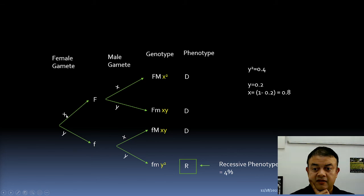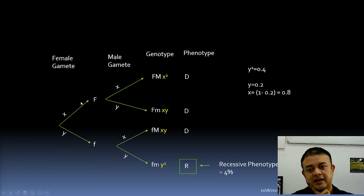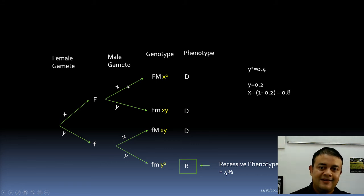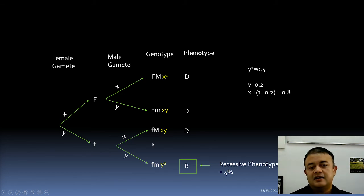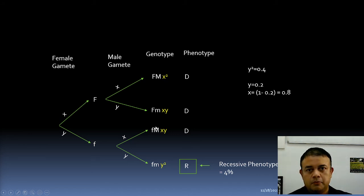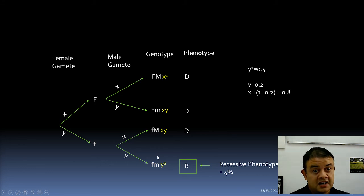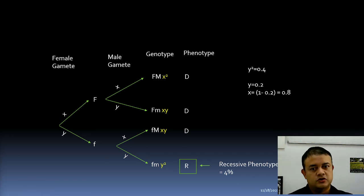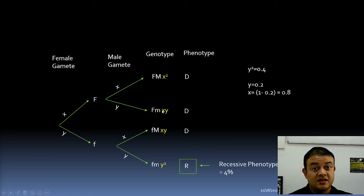So 32% of the population is heterozygous, both carrying the dominant phenotype. You substitute y = 0.2 and x = 0.8 throughout the probability tree to calculate all genotype frequencies. The heterozygous frequency is 0.16 + 0.16 = 0.32 — that is your answer. Please do the calculation yourself to follow along.